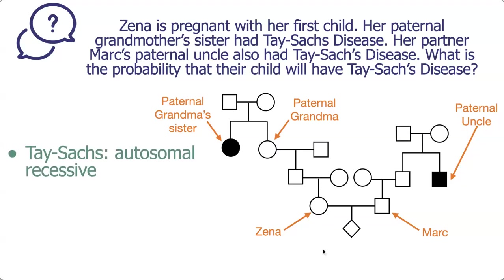Tay-Sachs is autosomal recessive. We label the genotype as little a little a for someone who is affected. The parents of those affected individuals must be carriers in order to have a child affected with an autosomal recessive trait, so we label them accordingly.